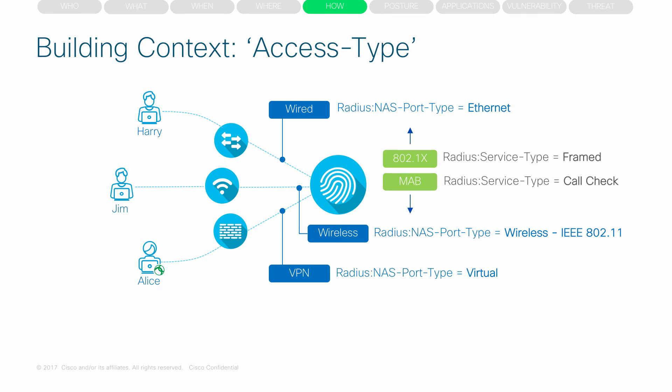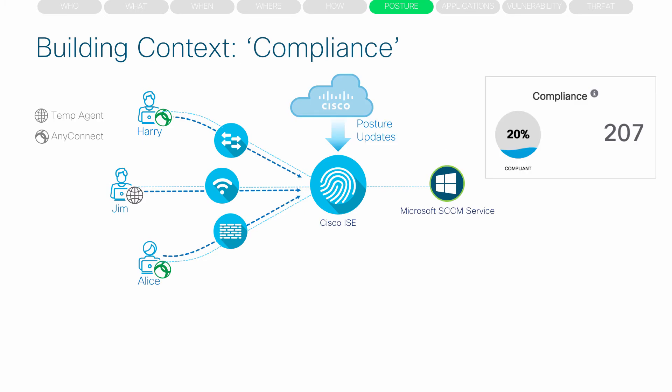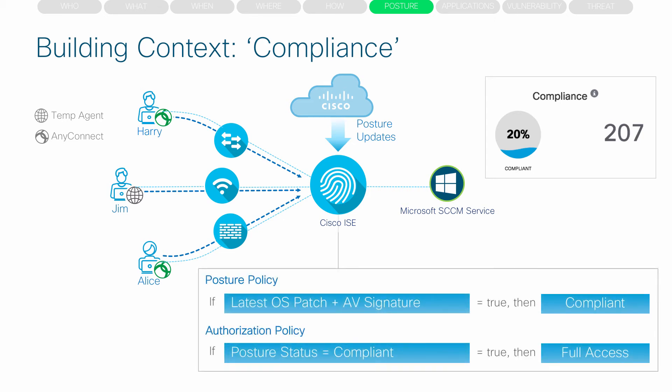HOW — how is someone or something connected? If it's wired, wireless, or VPN, RADIUS attributes tell us the details of how they're connecting. Posture, or compliance of the endpoint, requires the AnyConnect agent on the endpoint. We can have a posture policy on ICE that tells AnyConnect to check certain things to consider the endpoint compliant. These checks could be OS patch level, antivirus signatures, presence of a USB mass storage device, and much more.